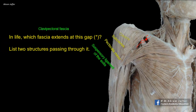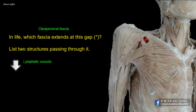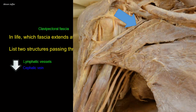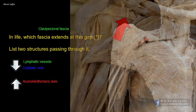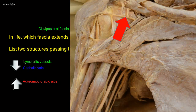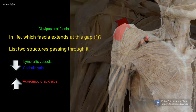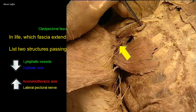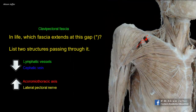Four structures pass through the clavipectoral fascia — two passing inwards and two passing outwards. Passing inwards are lymphatic vessels from the infraclavicular lymph nodes to the apical group of axillary lymph nodes, as well as the cephalic vein draining into the axillary vein. Passing outwards are the acromiothoracic artery, a branch of the second part of the axillary artery behind pectoralis minor, and the lateral pectoral nerve, a branch of the lateral cord of the brachial plexus supplying both pectoralis major and pectoralis minor.